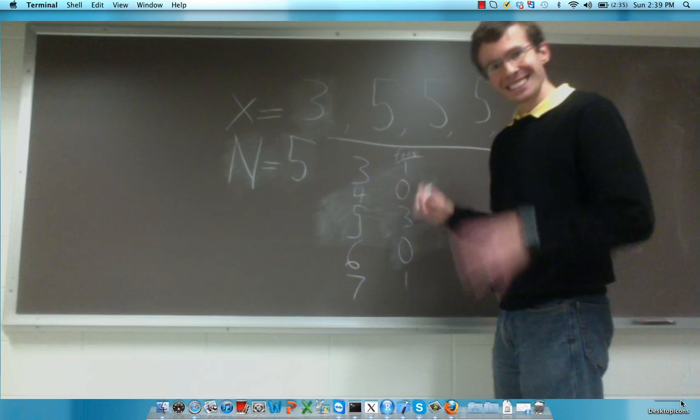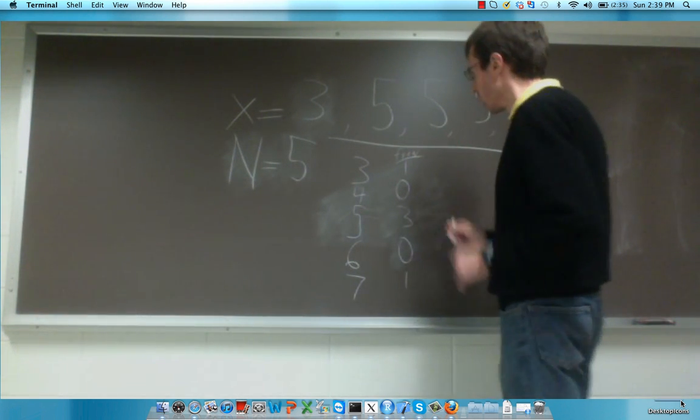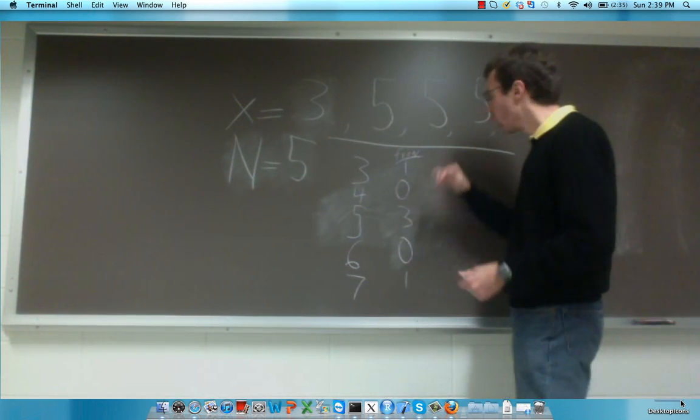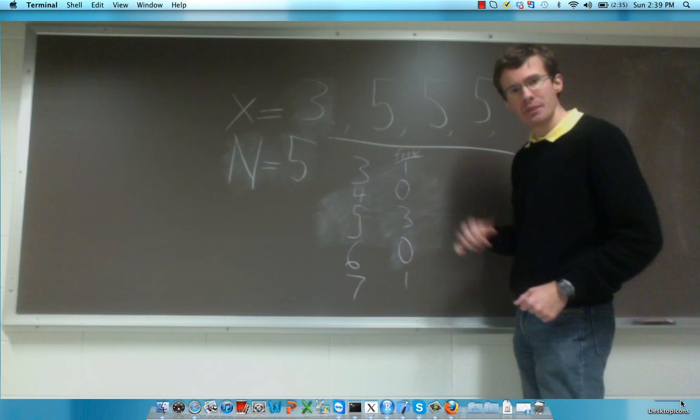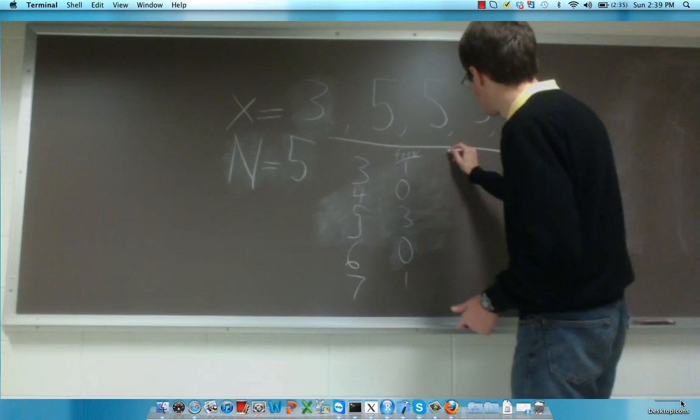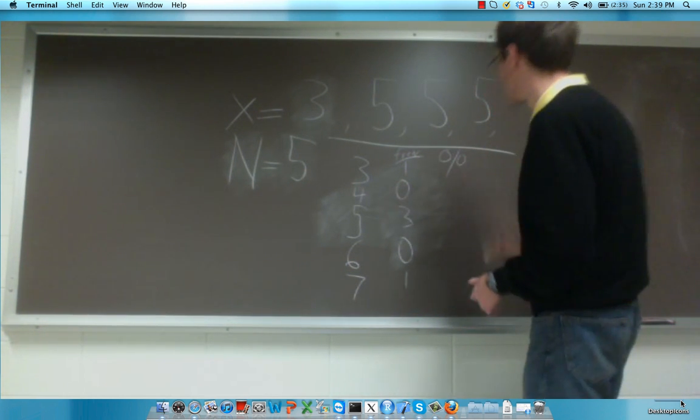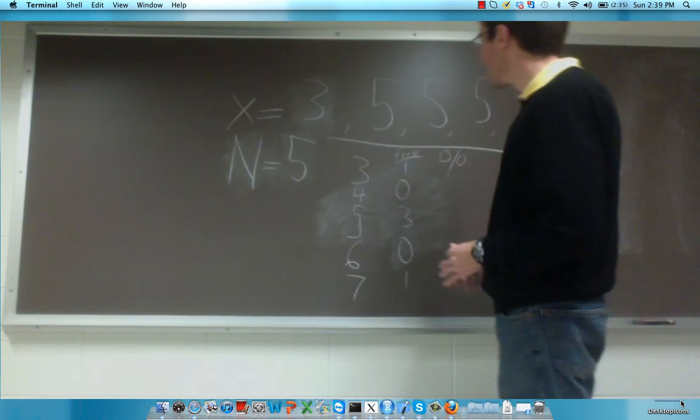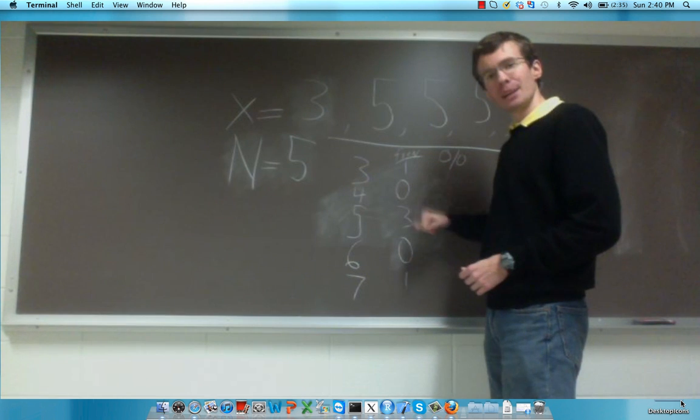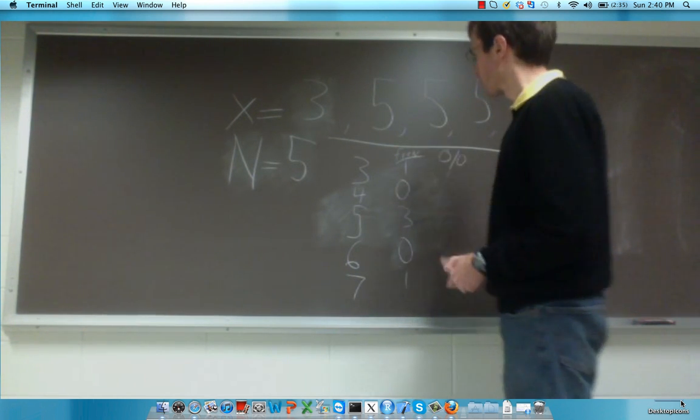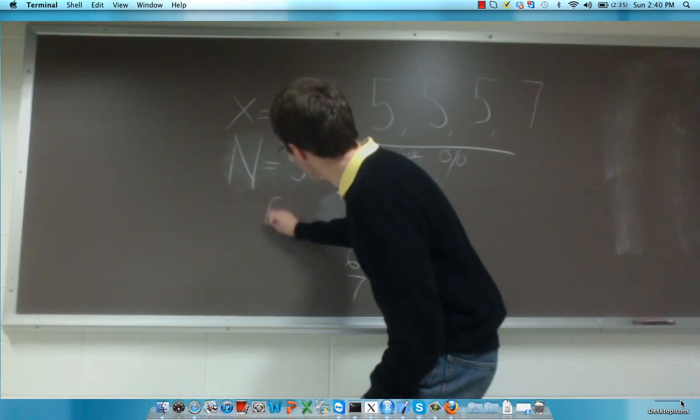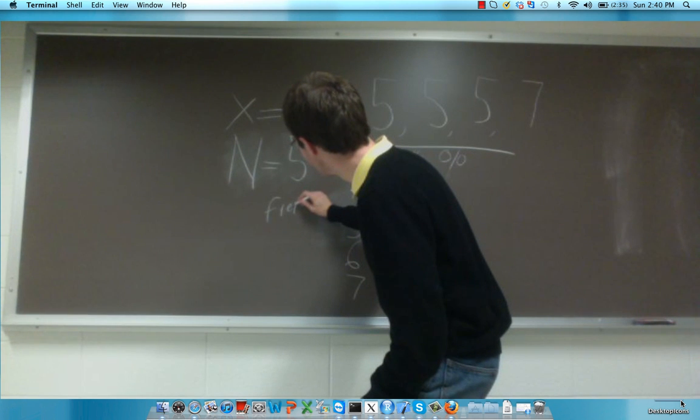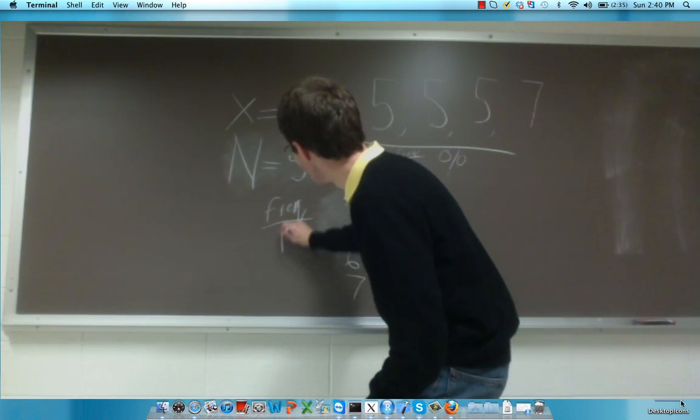The last thing we want to do is put in a percentage column so that we can quantify what percentage of the time we have each of these observations. And to calculate this, we need the frequency divided by the number of observations, so frequency divided by n.